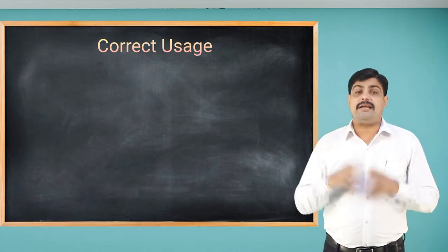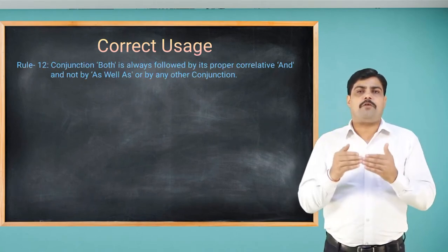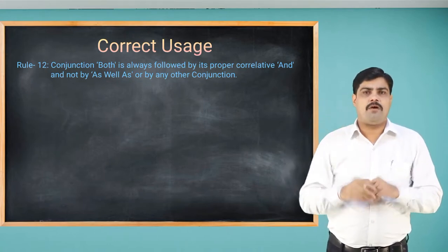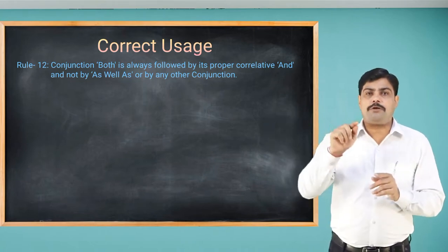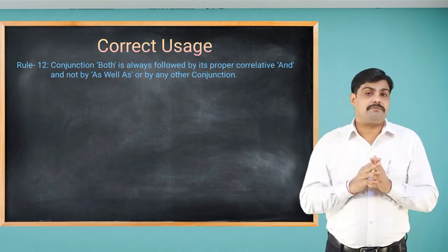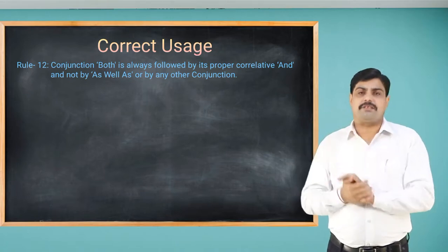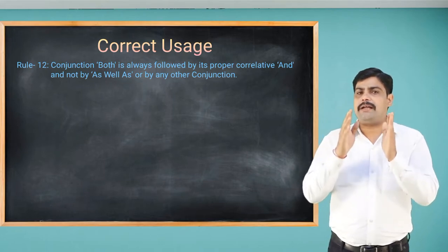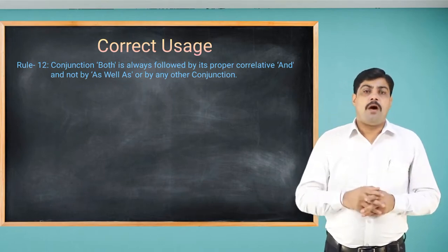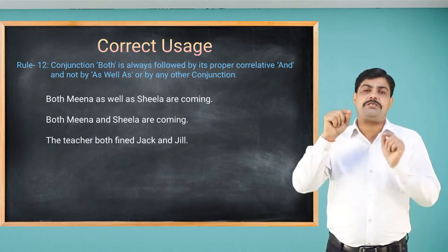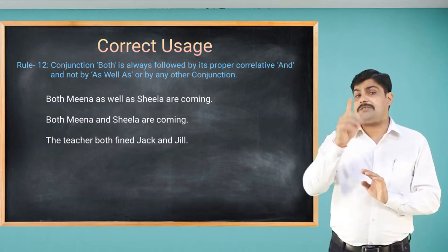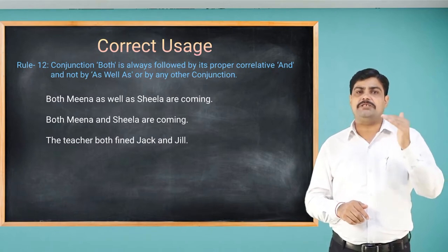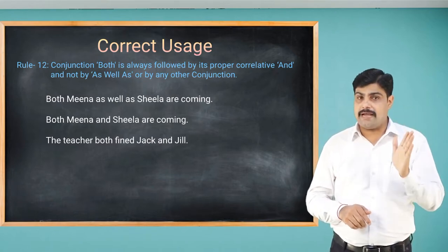Rule number 12: the conjunction 'both' is always followed by 'and' — not by 'as well as' or any other conjunction. Also, 'both' should be placed near to the word it refers to. For example, 'Both Mohan as well as Sheila are coming' is wrong — say: 'Both Meera and Sheila are coming.' Both always takes 'and' after it.